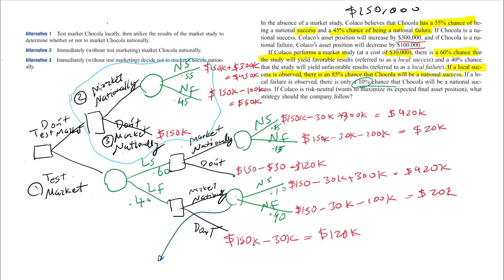For this node I'm going to write 0.10 times 420K plus 0.9 times 20K, which is going to be 42K plus 18K, which is 60K.